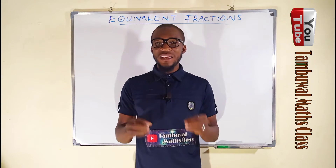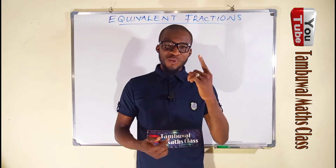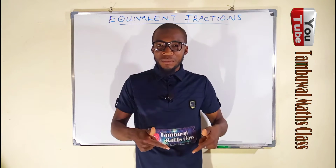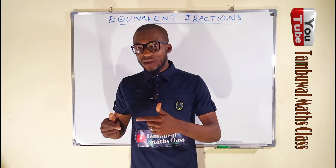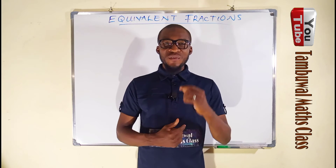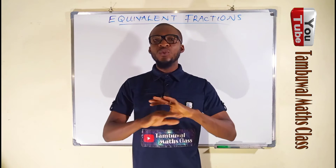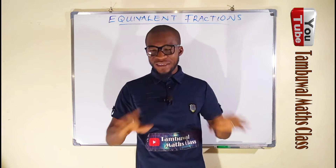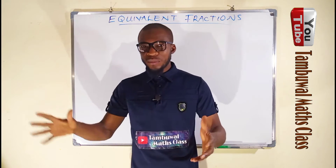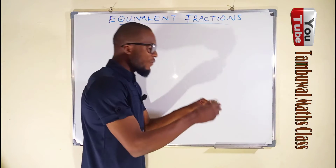But how can we figure out if fractions are equivalent? Number one: if you reduce any two or more fractions to their lowest term, if they are equivalent they will be the same. Number two: the ratio of their corresponding numerator to that of their denominator is also equal. And last but not least: if you reduce them to decimal numbers, they will be exactly the same.